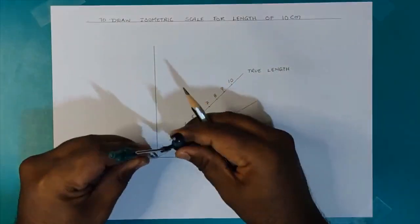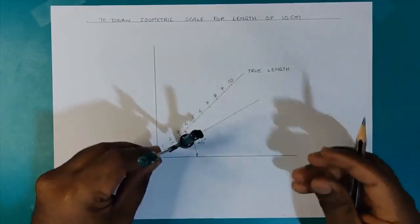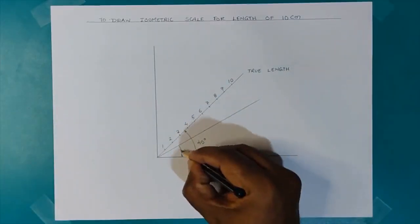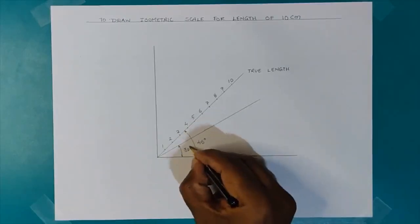From these divisions, I will be dropping perpendiculars onto the line which is inclined at 30 degrees, as shown.